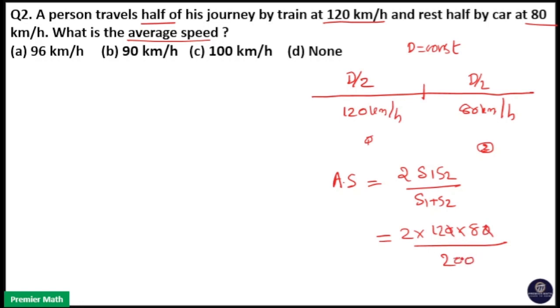So zeros cancel, 2s cancel. That is 12 into 8, 96 km per hour is your answer. Option a is your answer.